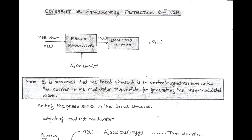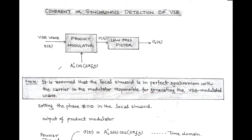In this, we use a locally generated sinusoidal carrier signal that is applied to the product modulator. It is assumed that the local sinusoidal carrier is in perfect synchronism with the carrier in the modulator that is responsible for the generation of the VSB wave, hence called synchronous or coherent detection. The input of the product modulator is the VSB wave, and the output is simply the product of VSB and the locally generated carrier, and the output is V function of T.